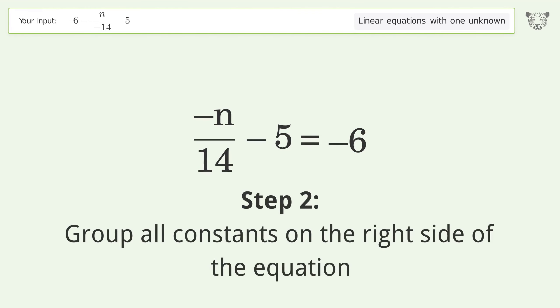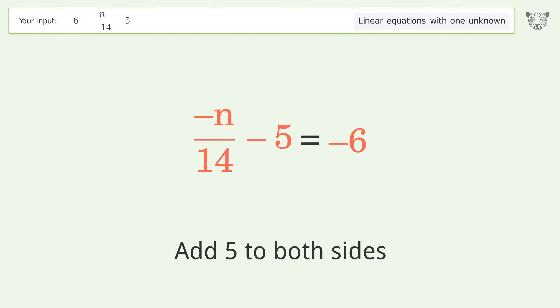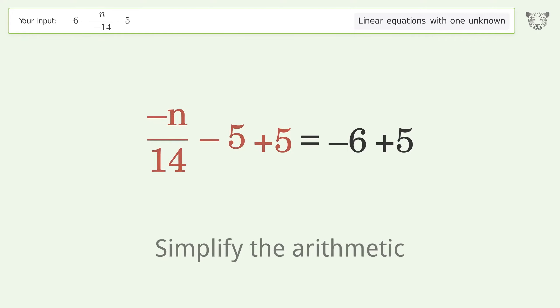Group all constants on the right side of the equation. Add 5 to both sides. Simplify the arithmetic.